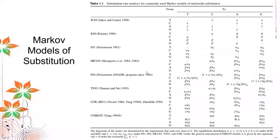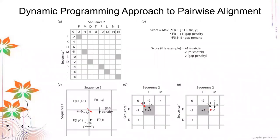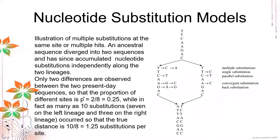That's how substitutions work in alignment. Now, how do we know what score to give for penalty, match, and mismatch? This is where scoring matrices come in. Scoring matrices are based on substitution models. We start with nucleotide substitution models. These illustrate multiple substitutions at the same site — multiple hits — applying the theory of evolution, where we assume a common ancestor sequence that diverged into two sequences.